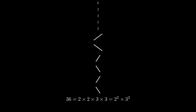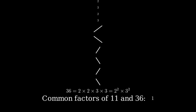Now, to simplify our fraction, we need to find the greatest common factor between 11 and 36. Looking at our list of factors, we can see that the only number that appears in both lists is 1.